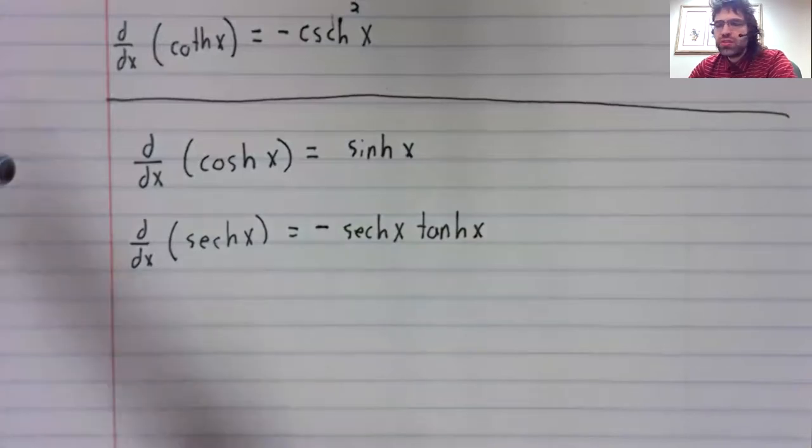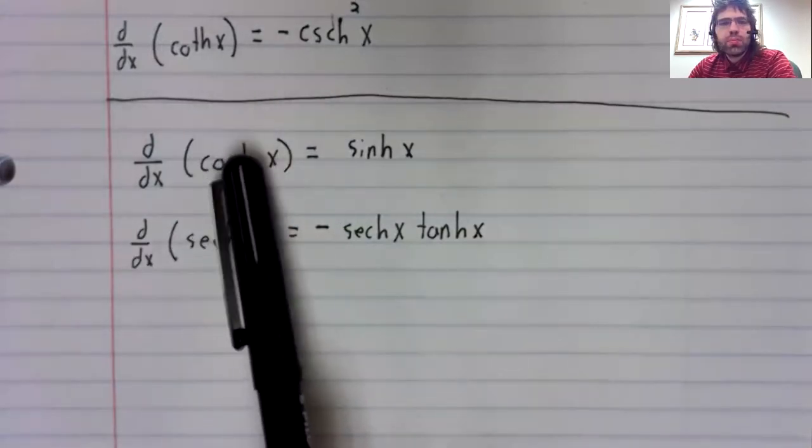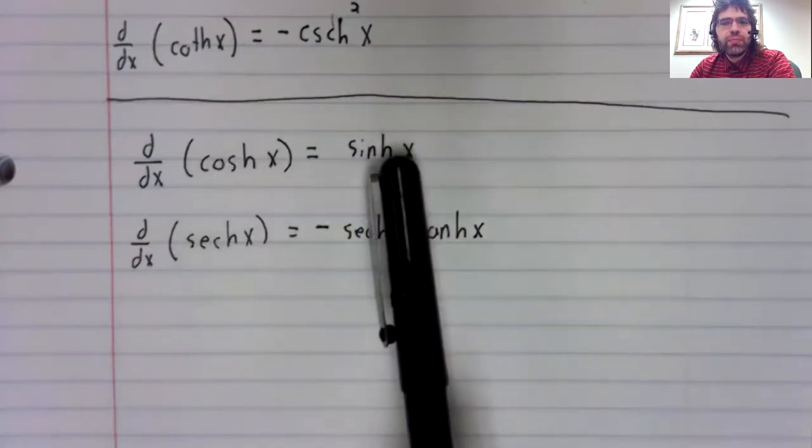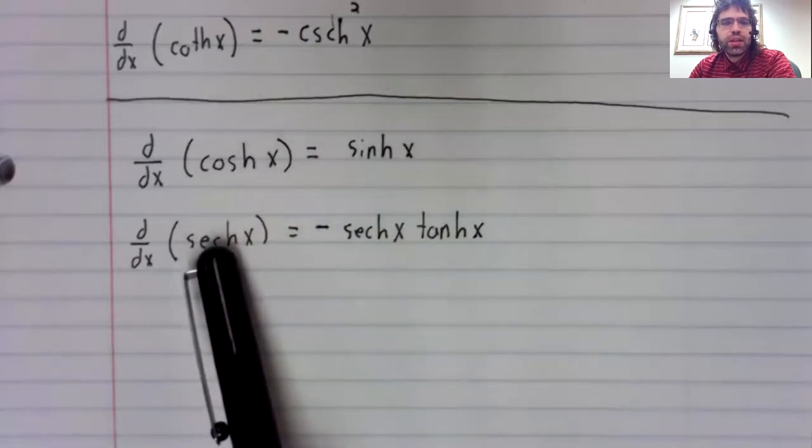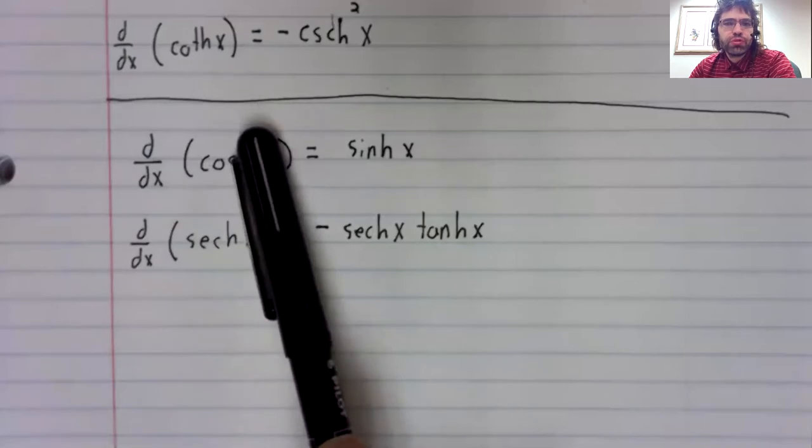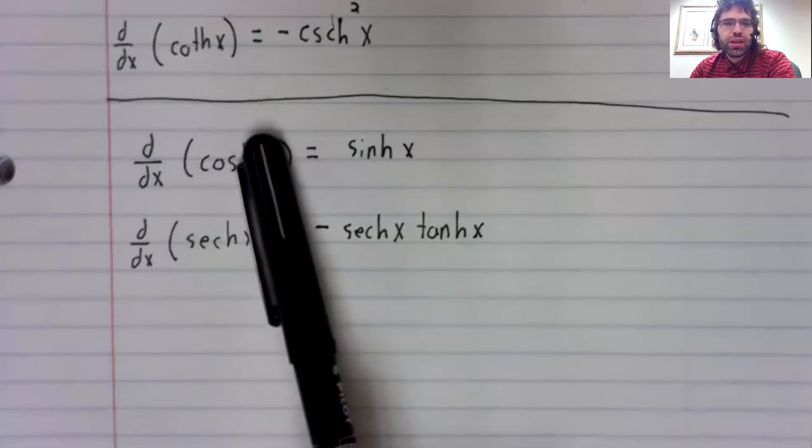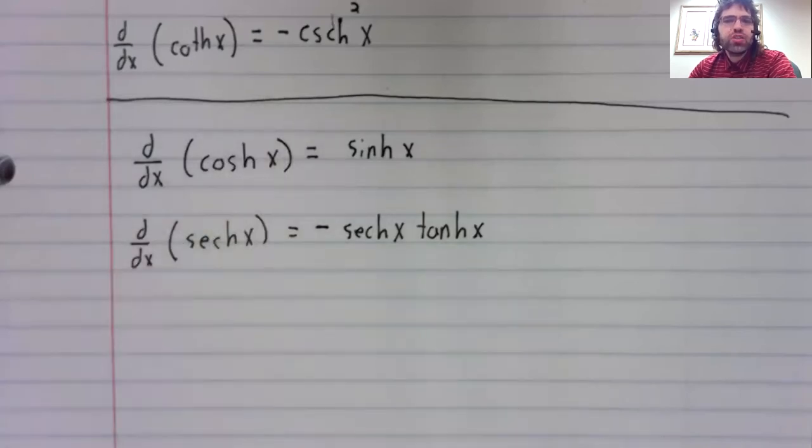And of course, it's no coincidence. Once the hyperbolic cosine had a different derivative than you might expect, the hyperbolic secant, which is the reciprocal of this thing, was pretty much guaranteed to also have a different derivative than you might expect.